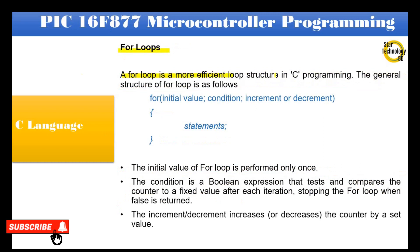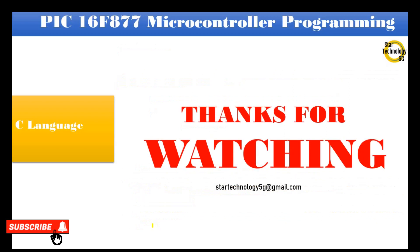A for loop is a more efficient loop structure in C programming. The general structure is: for (initial value; condition; increment or decrement) { statements }. The initial value is performed only once. The condition is a boolean expression that tests and compares the counter to a fixed value after each iteration, stopping the loop when false is returned. The increment or decrement increases or decreases the counter by a set value. Thanks for watching — please subscribe to Star Technology 5G and keep watching.